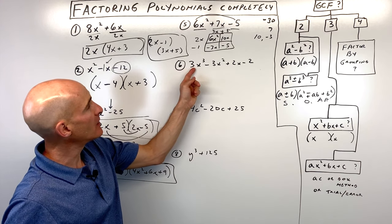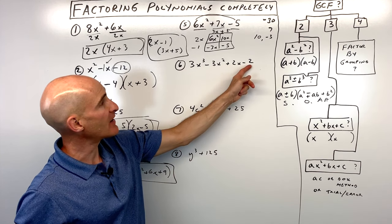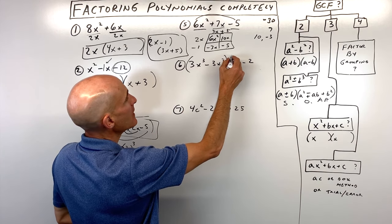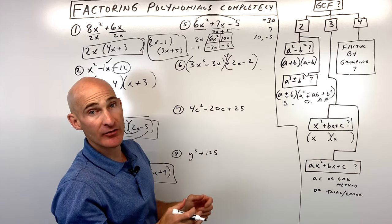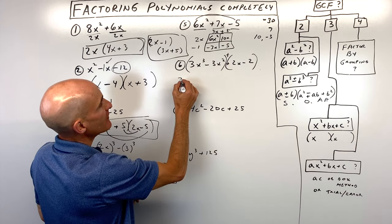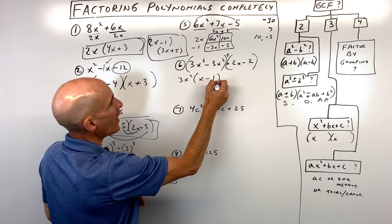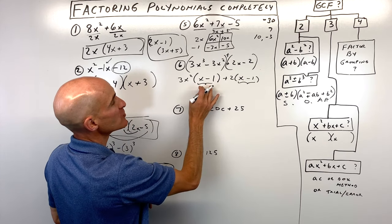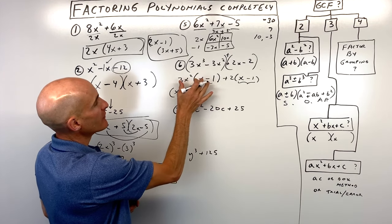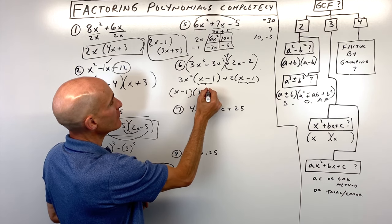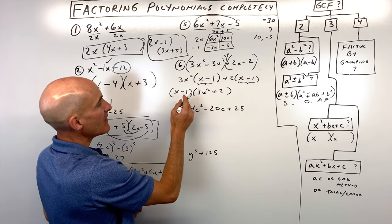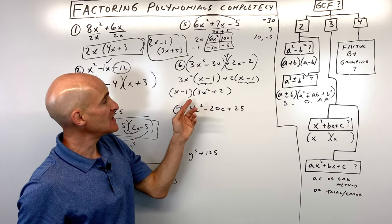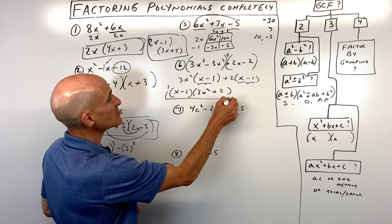Number six has four terms and no greatest common factor, so we're going to check factoring by grouping. We group the first two terms and the last two terms — remember they're added, not multiplied. We factor out 3x squared from the first group, giving x minus 1. We factor out 2 from the second group, also giving x minus 1. Both groups share the factor x minus 1, so we factor it out to get x minus 1 times 3x squared plus 2. We check to see if we can factor further — in this case we can't.